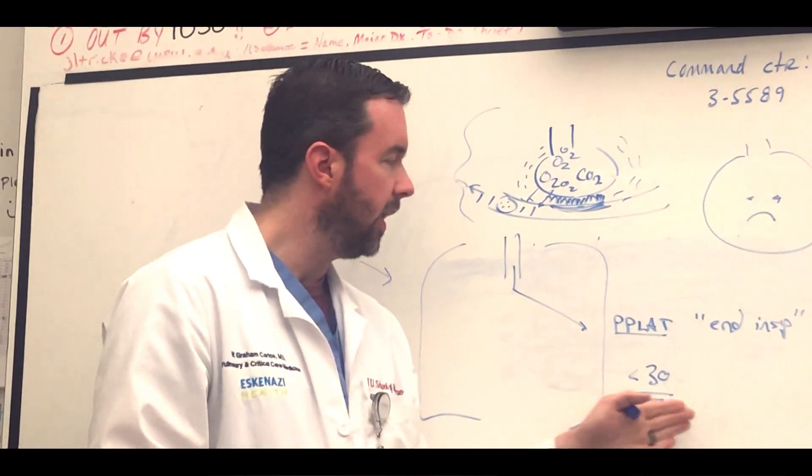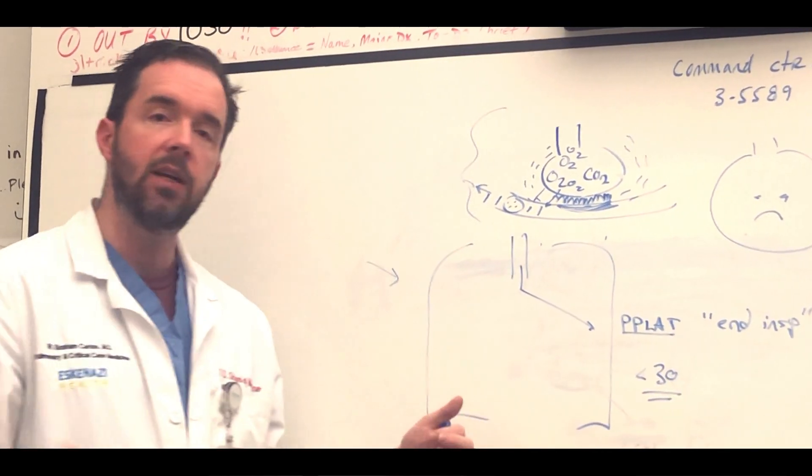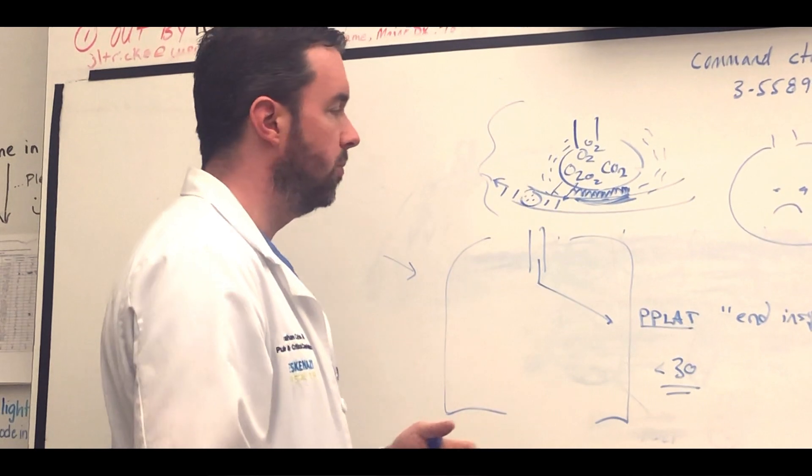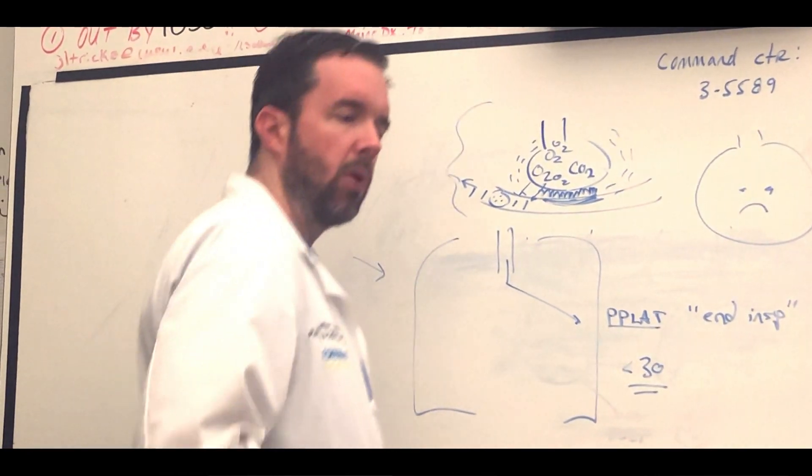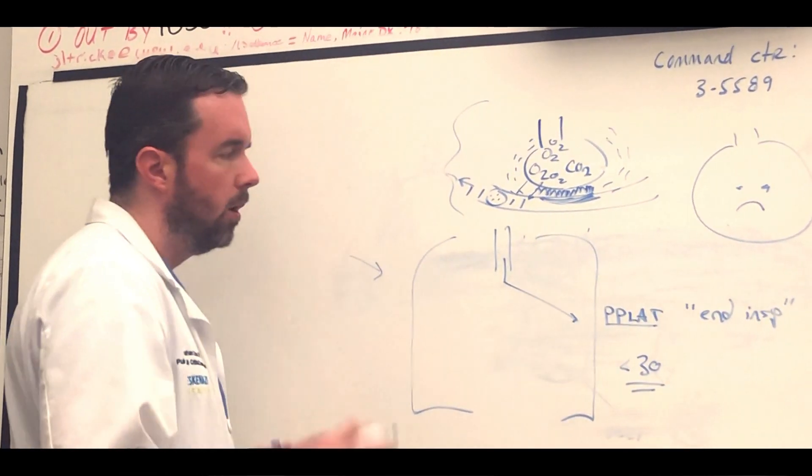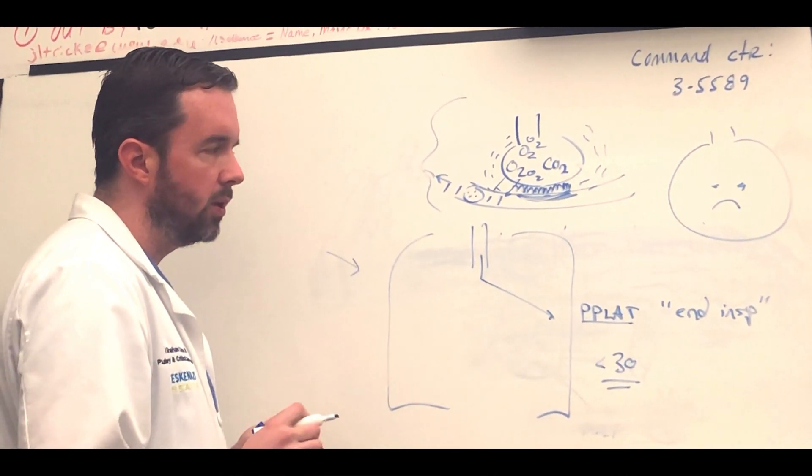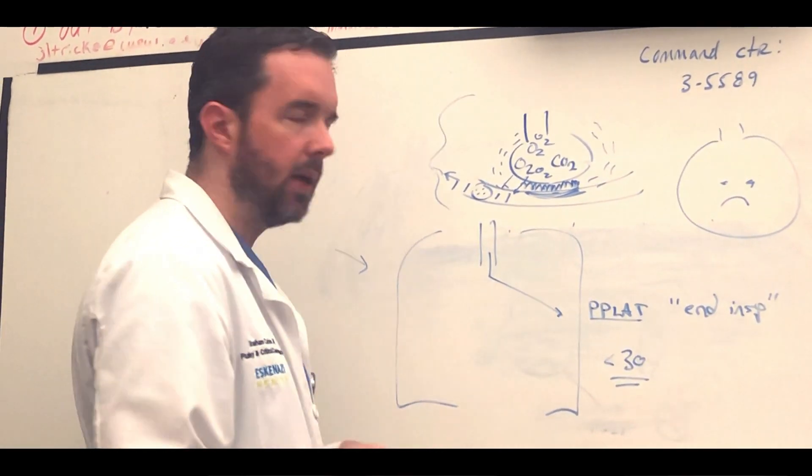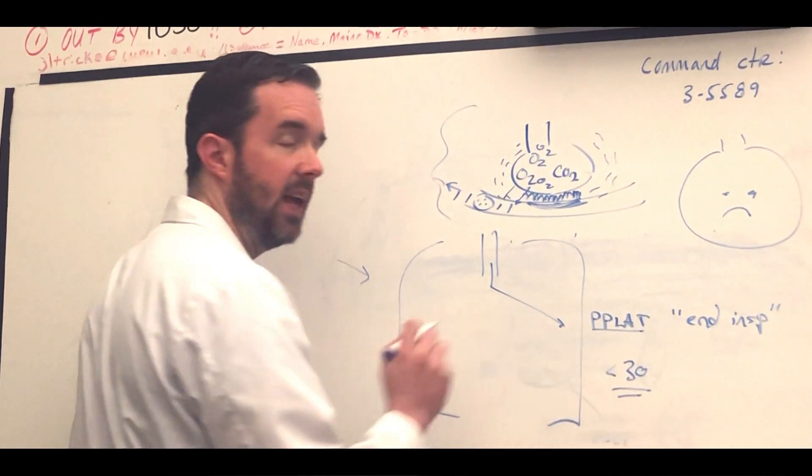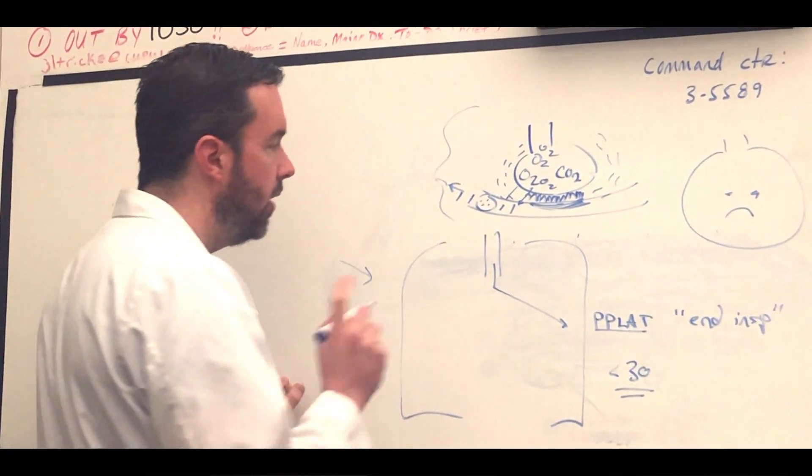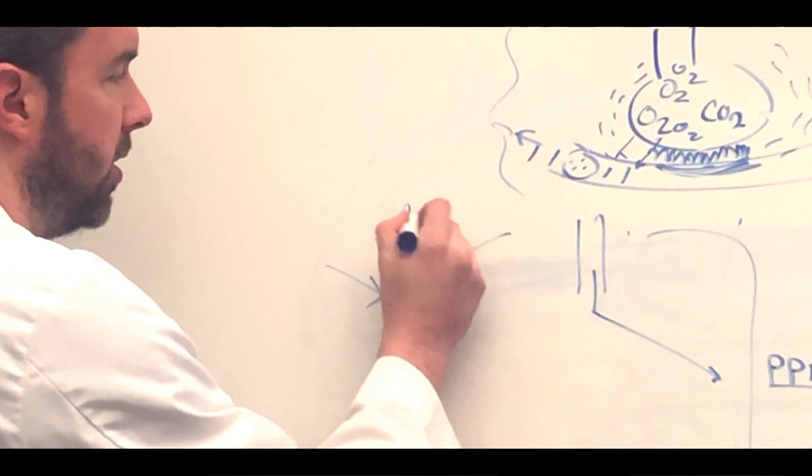There's some times when we allow P-plats to climb above 30. These include cases of morbid obesity, where you have a counter pressure pushing back up on the thorax. But for the most part, one of the things we're looking for to know that we're safely ventilating patients is the P-plat, which is the end inspiratory pressure.